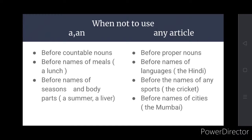There are also places when we should not use the articles. A and an: before countable nouns, before names of meals. A lunch. We never say let's go for a lunch. We say let's go for lunch. Before names of seasons and body parts: a summer, a liver.